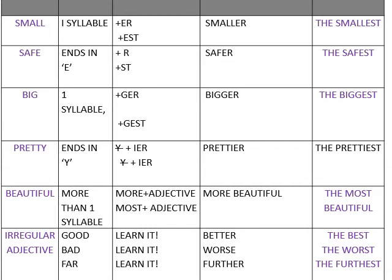For 'pretty' — it ends in Y, so don't forget to change the Y into I before adding '-er' or '-est': prettier, the prettiest.